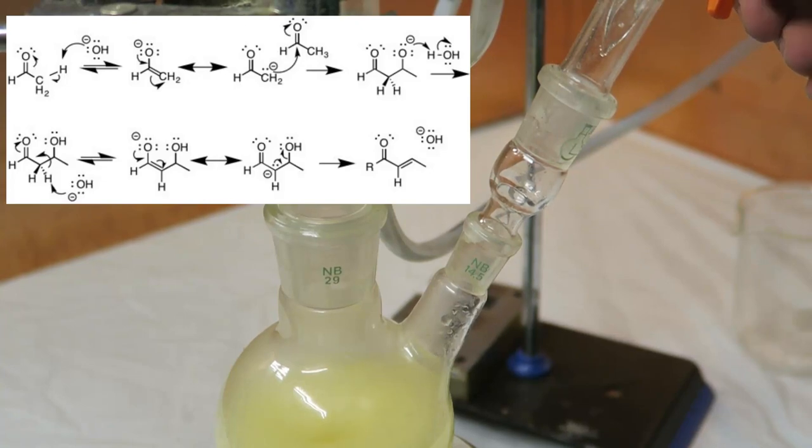Next, the nucleophilic enolate attacks the carbonyl of the other aldehyde, forming the intermediate alkoxide. The nucleophilic alkoxide then deprotonates water, reforming the hydroxide ion and the famous beta-hydroxy form, which you can see in the bottom left corner.